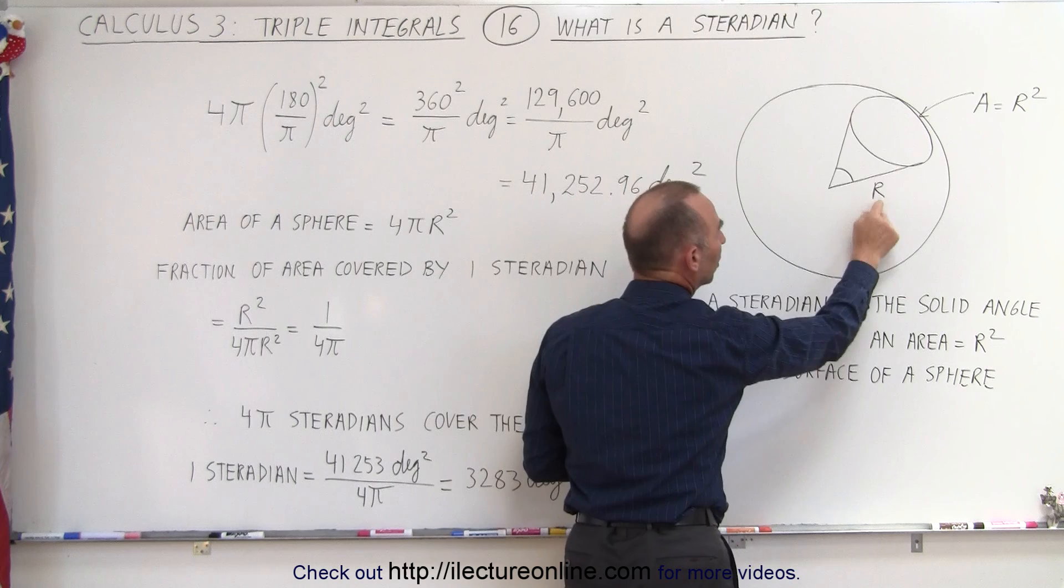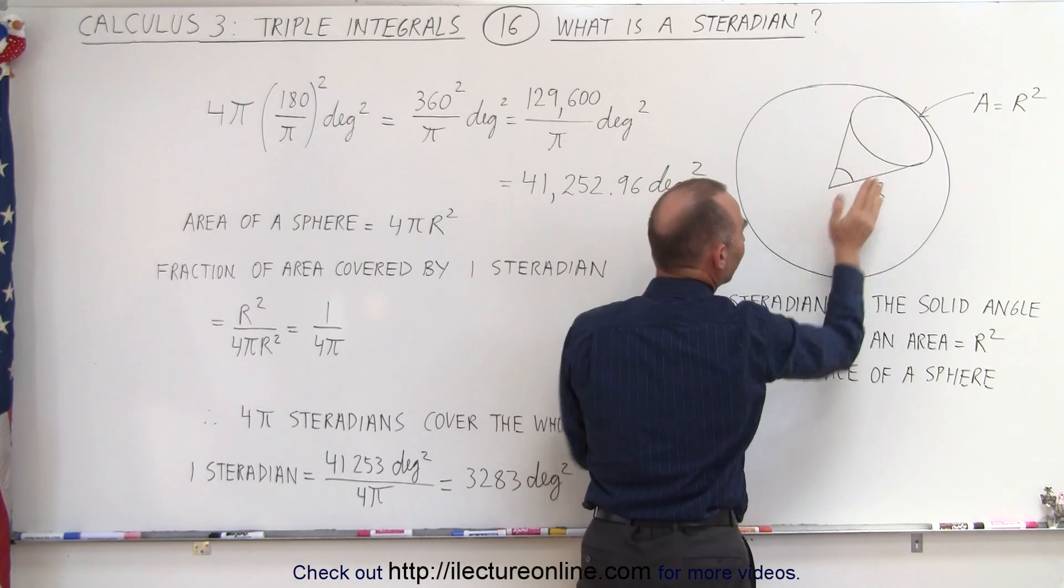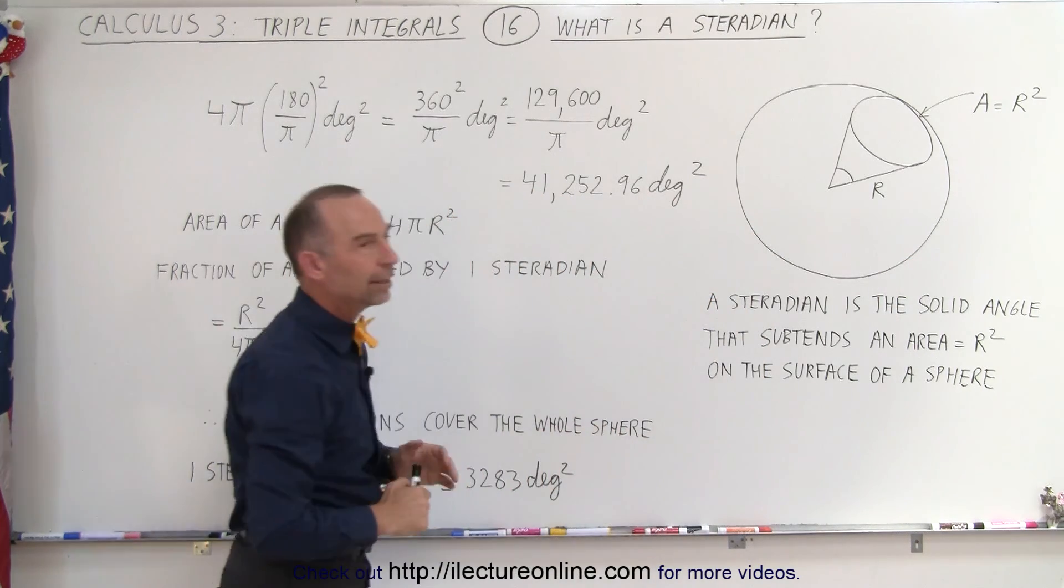that subtends an area equal to r squared on the surface of a sphere. So we have a sphere with radius r. If the area is r squared, the angle that subtends that, and that would be a two-dimensional angle, is equal to one steradian.